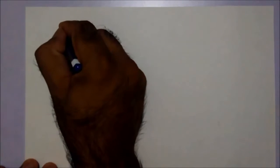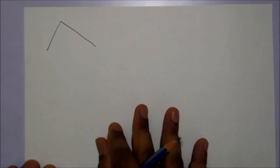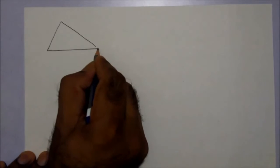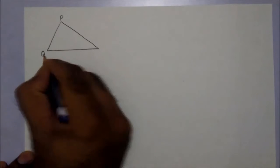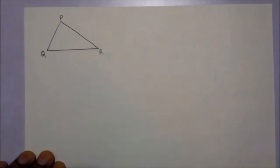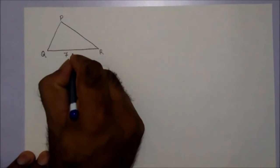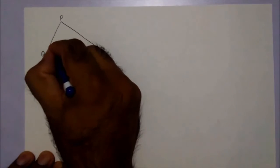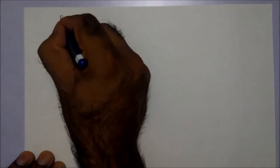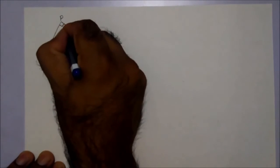Triangle PQR where QR is 7 cm, angle Q is 60 degree, and angle P is 90 degree.